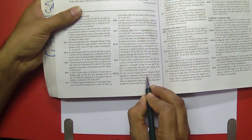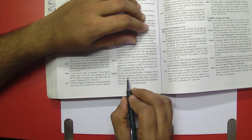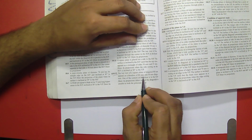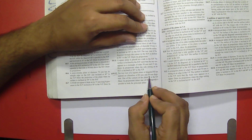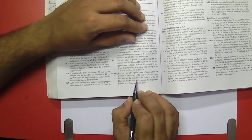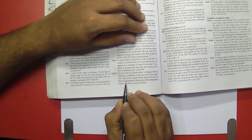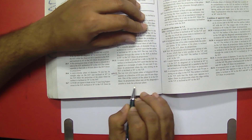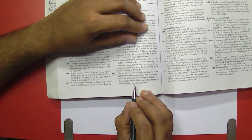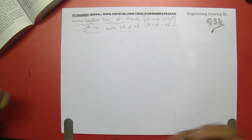The problem states: the top view of a square plane of diagonal 80 mm appears as a rhombus of 80 mm and 50 mm — meaning the major diagonal is 80 and the minor diagonal of the rhombus is 50. One corner of the plane is in HP. Draw its projections when one of the diagonals is parallel to both the principal planes, that is parallel to HP and VP. For this question we can adopt any of the available methods.